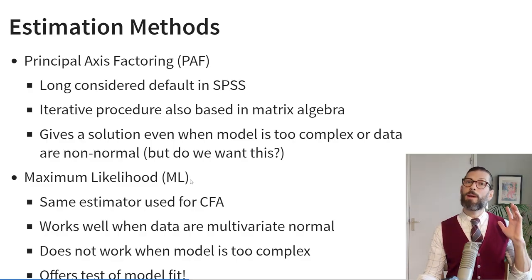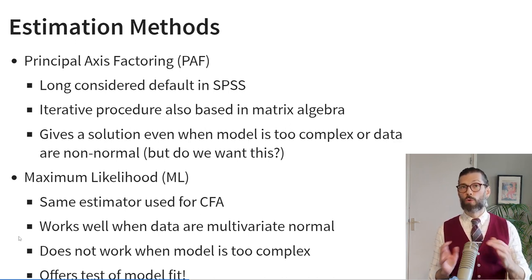A second way to estimate model parameters is maximum likelihood. We also use this technique to estimate logistic regression models. Maximum likelihood tends to work well when data are multivariate normally distributed, but it does not work well when your model is too complex. However, maximum likelihood has one major advantage: unlike principal axis factoring, it actually estimates a model and therefore gives you a test of model fit. You can use maximum likelihood not only to estimate your model, but also to estimate how well that model fits the data.